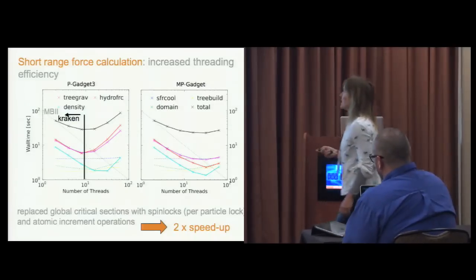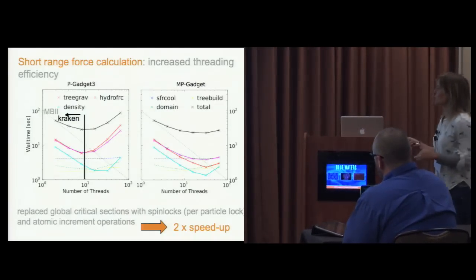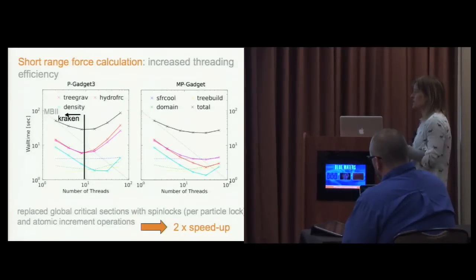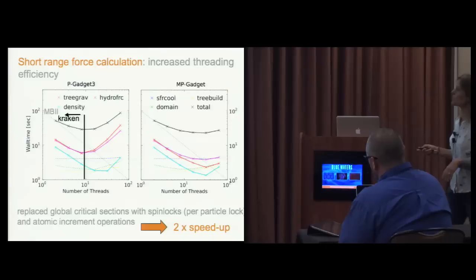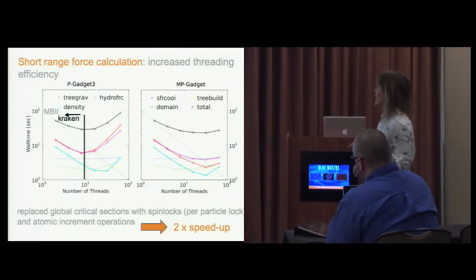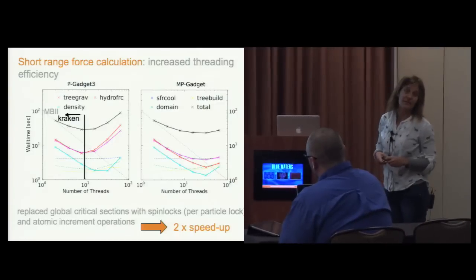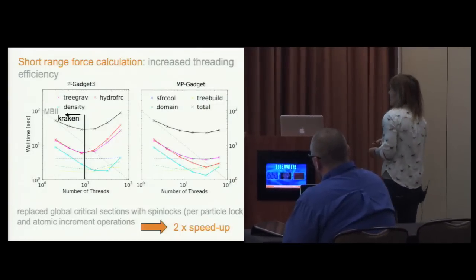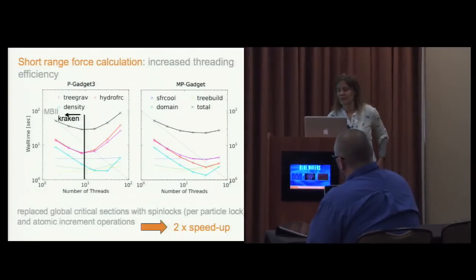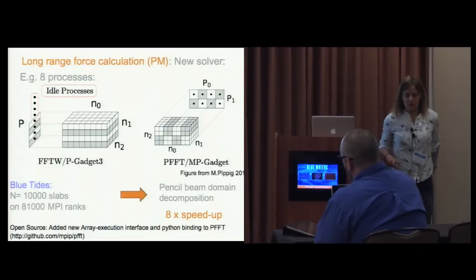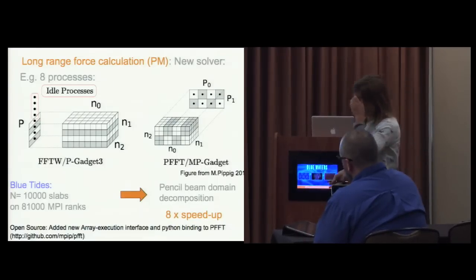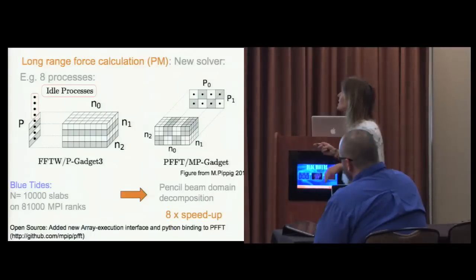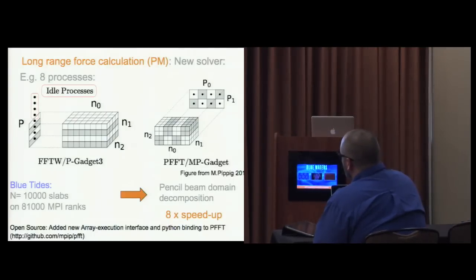This can be beaten down a lot by replacing some global critical sections with spin locks, so per-particle locks. We don't suffer this problem of particles interfering with each other when they're being drifted, and also atomic increment operations. This meant we could move to large numbers of threads effectively, with in fact a speed up by a factor of two.